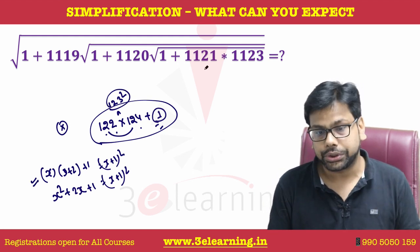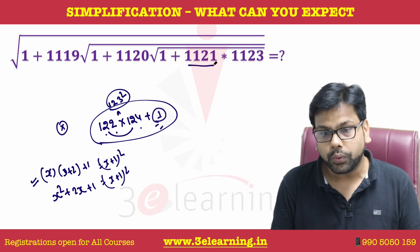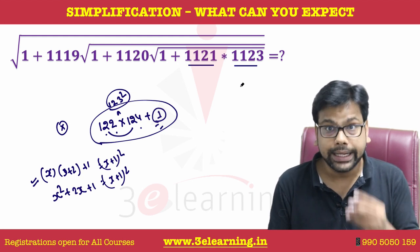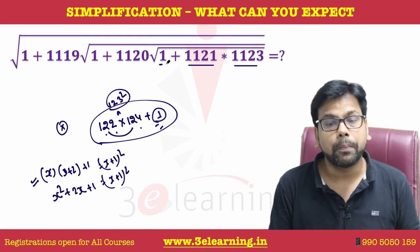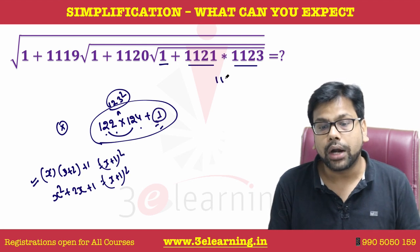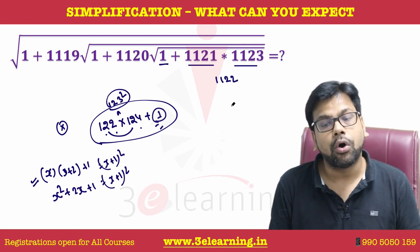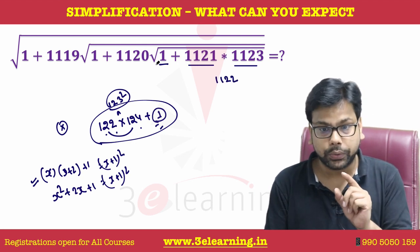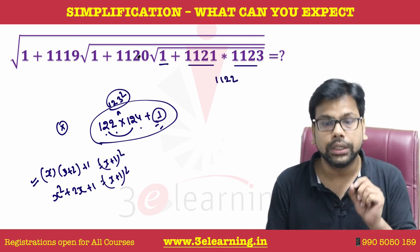Now solve this question. We have 1121 × 1123 — gap of 2 — plus 1. This gives 1122 whole square, under a root.